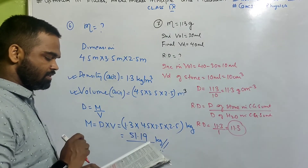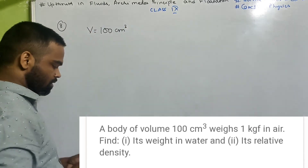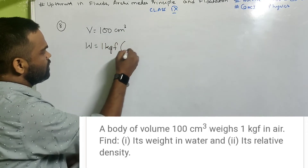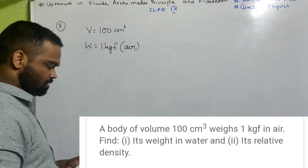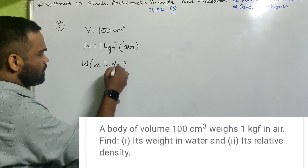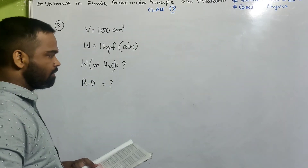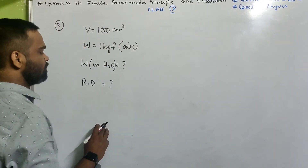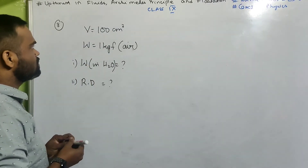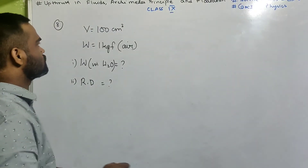Now let us look at number 8. A body of volume 100 cm³ weighs 1 kgf in air. They want its weight in water and the relative density of that body. First we find relative density. Weight = 1 kgf = 1000 gf, which means mass = 1000 grams. We have mass and volume, so density = mass ÷ volume.